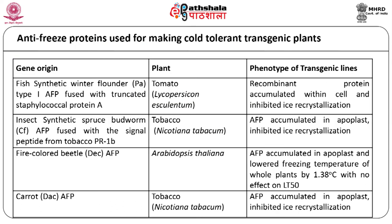Transgenic plants expressing genes encoding antifreeze proteins have been developed from tomato, tobacco, and Arabidopsis. The gene origins are from different organisms including fish synthetic winter flounder type 1 AFP fused with truncated staphylococcal protein A, insect synthetic spruce budworm, a fire-colored beetle AFP, and charred AFPs.